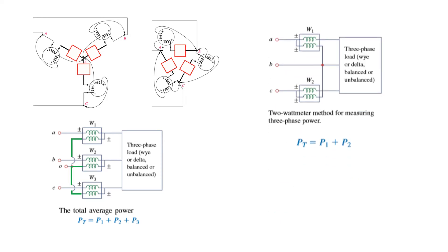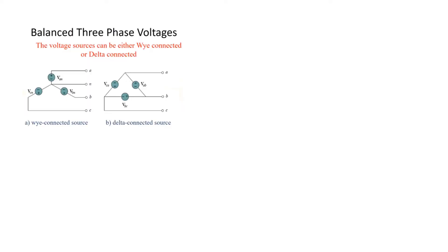Another option is using just two watt meters instead of three. For the same Y or delta circuit, the total power is the sum of the two: P1 plus P2. It can be proved that the power measured by three meters equals the power measured by two meters, which is why the three watt meter method is not used — the two watt meter method is preferred.